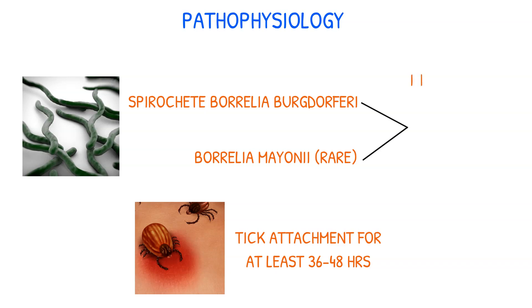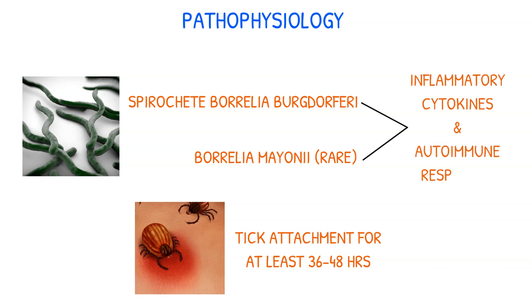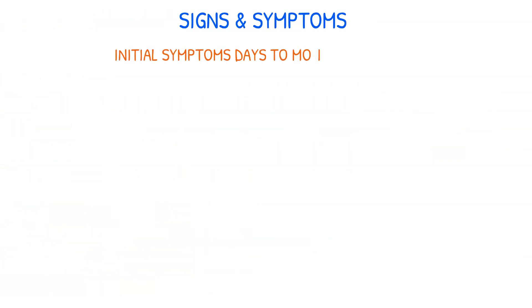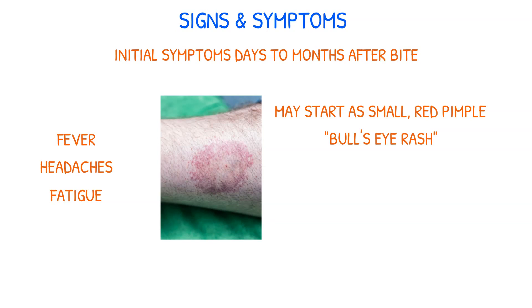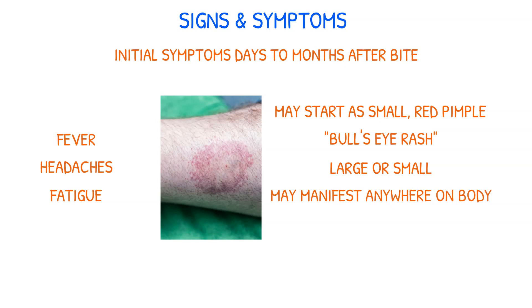The spirochete infection triggers inflammatory cytokines and autoimmune responses. The first stage symptoms may appear days to months after the bite. Fever, headaches, fatigue, and an erythema migrans-like rash are typical symptoms during this stage. The rash can start as a small red pimple then spread into a ring-shaped rash, also known as a bullseye rash. This rash may be large or small and manifest anywhere on the body, not just the area of the tick bite. In some cases there may be more than one rash, or no rash at all.